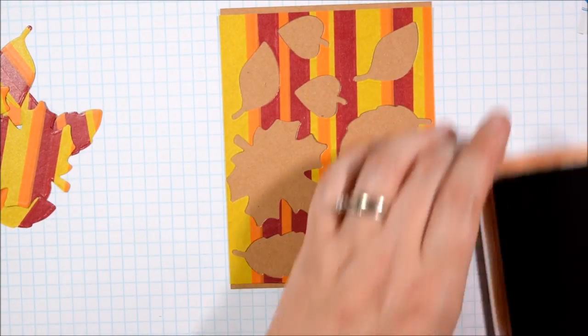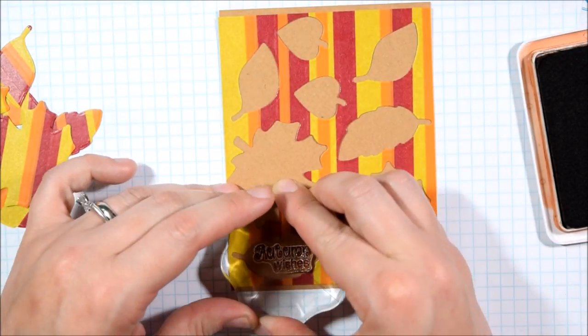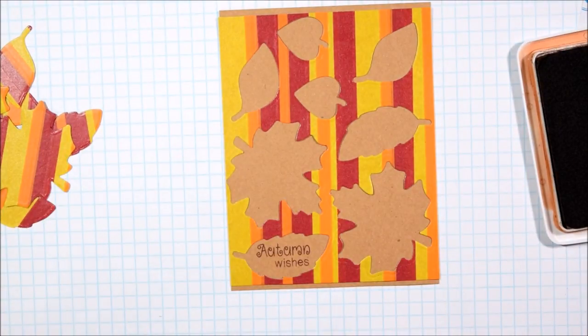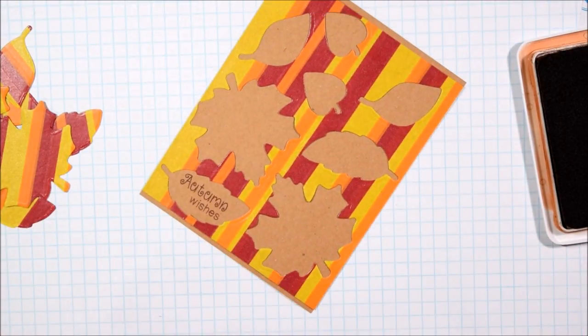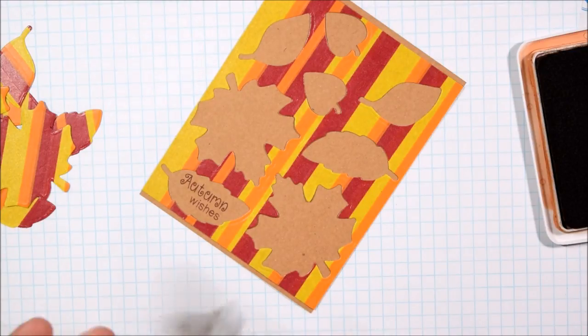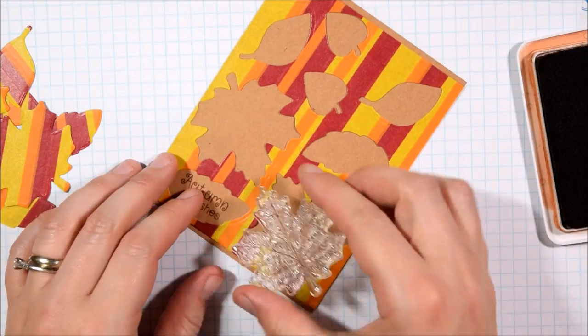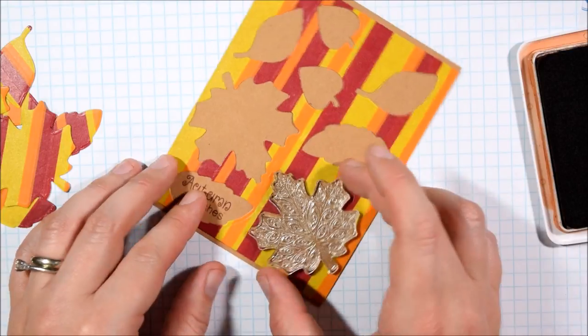Because this is a fall card, this is why I'm choosing to work with craft cardstock as a base. I usually use white as my neutral and stamp in black ink, but to go with the fall theme I'm going to use the craft cardstock and some brown ink, this is the sepia ink and it's an archival.